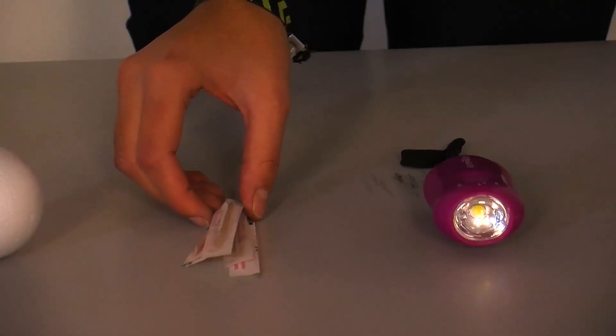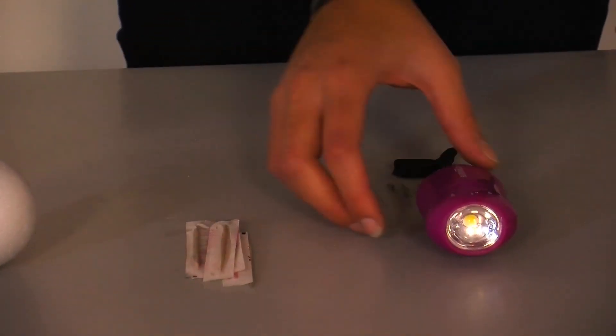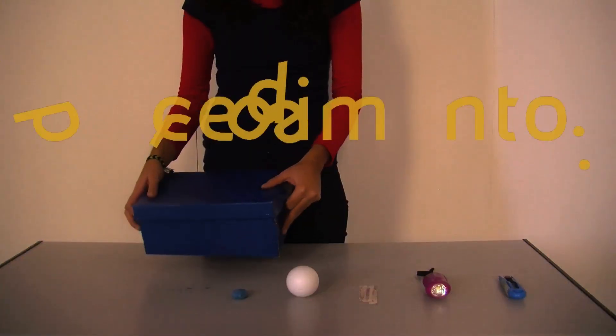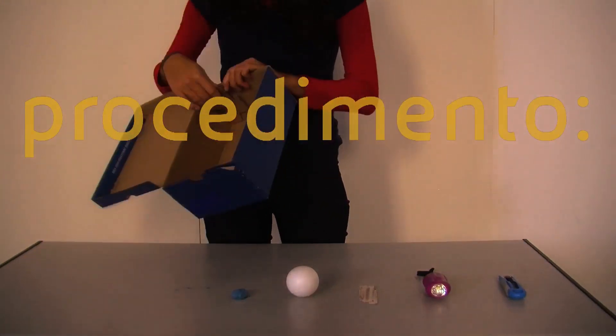Take the shoe box and fold it again so that the dark part is inside.